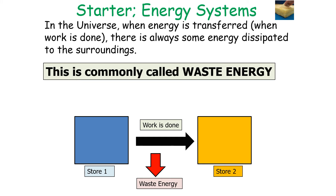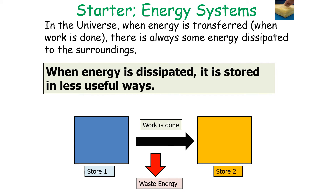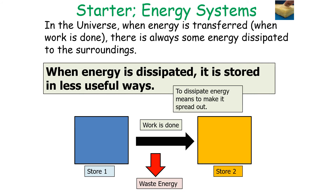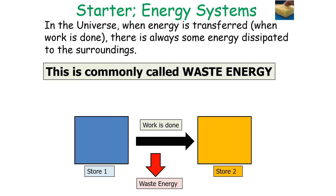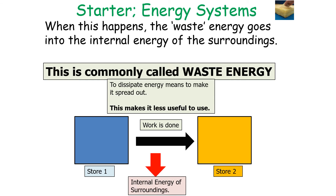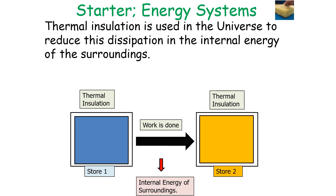In reality, when energy is transferred — when work is done — there's always some energy dissipated to the surroundings, which we commonly call waste energy. When energy is dissipated, it is stored in less useful ways. To dissipate energy means to spread it out. Some waste energy is dissipated to the surroundings, making it less useful to use. Thermal insulation is used to reduce this dissipation to the internal energy of the surroundings.